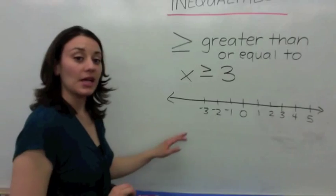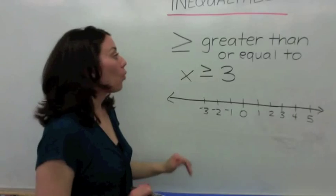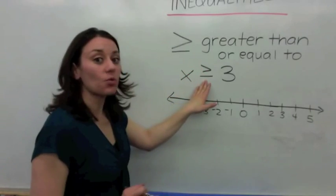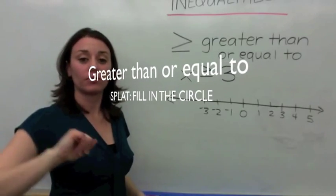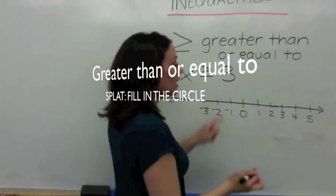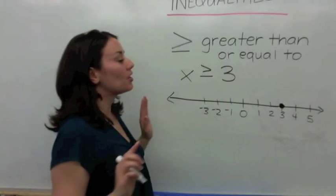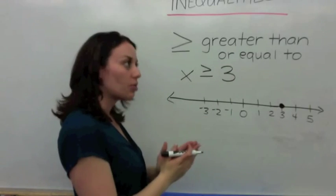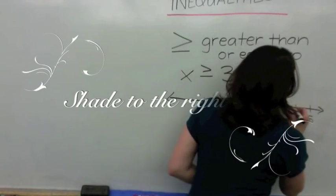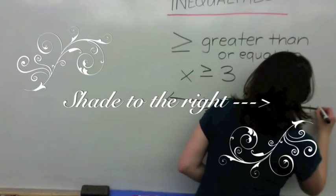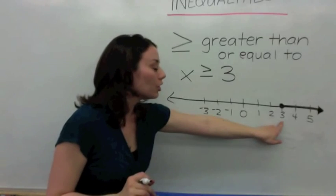Now, let's look at what happens when X is greater than or equal to 3. When you see 'greater than or equal to,' you want to splat — go ahead and fill in that circle. Find 3 and splat, fill in the circle. Because X is greater than or equal to 3, you're going to shade to the right. All values that come after 3 should make this true, including 3.